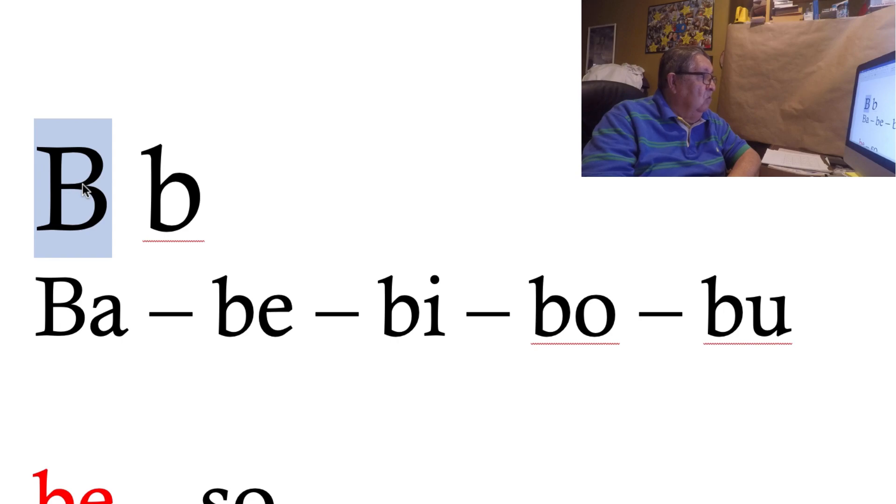Esta B es mayúscula, esta B es minúscula. En español decimos B. B con la A es ba, la B con la E es be, la B con la I es bi, la B con la O es bo, la B con la U es bu.